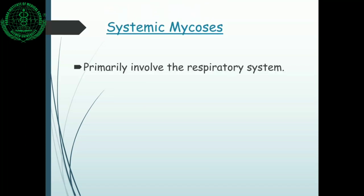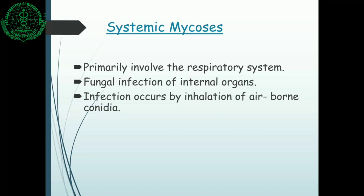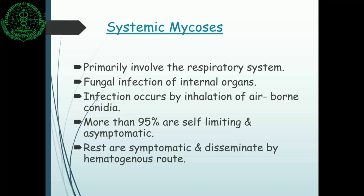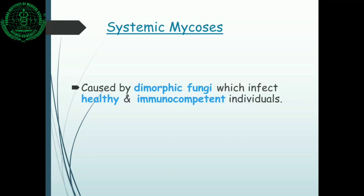The primary involvement is the respiratory system, and later they may involve internal organs. Infection occurs primarily from inhalation of the airborne route. More than 95% of infections by these causative agents are self-limiting and asymptomatic; the rest are symptomatic and disseminate via the hematogenous route. Most of these infections are caused by dimorphic fungi, which cause systemic mycoses in healthy and immunocompetent individuals.